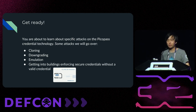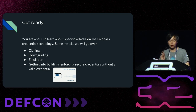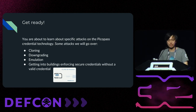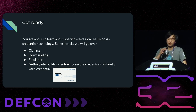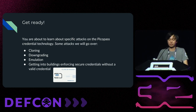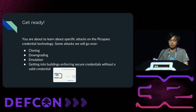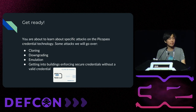Today we're going to cover a few things on our agenda: cloning, downgrading, emulation, and getting into buildings enforcing secure credentials. We're going to go over a few ways to exploit HID iClass credentials to gain unauthorized access into a facility. We'll cover four different attacks today in varied degrees of complexity.